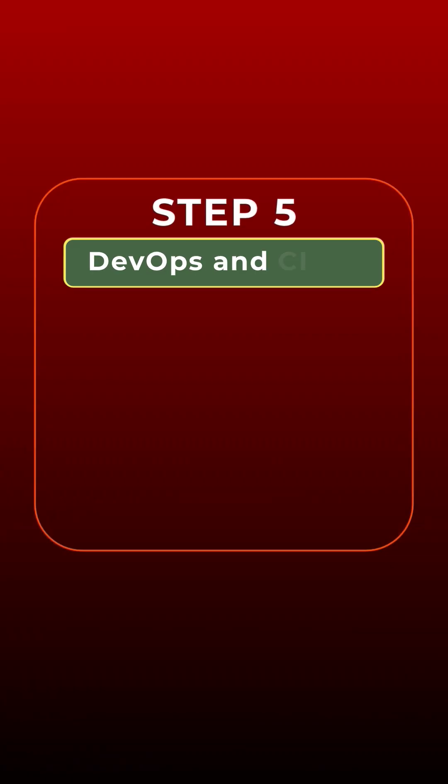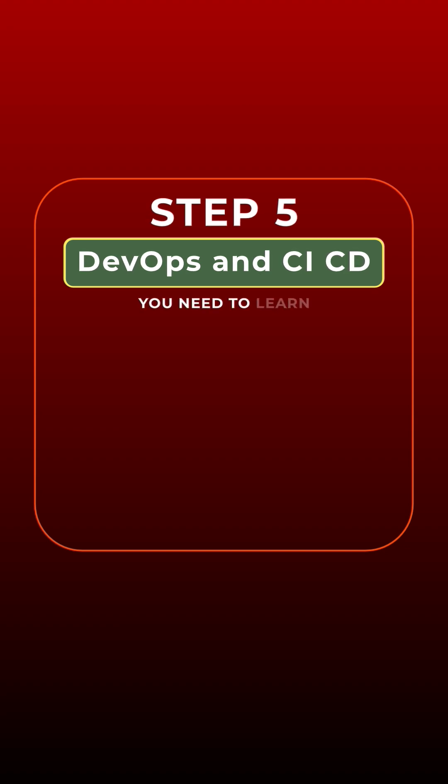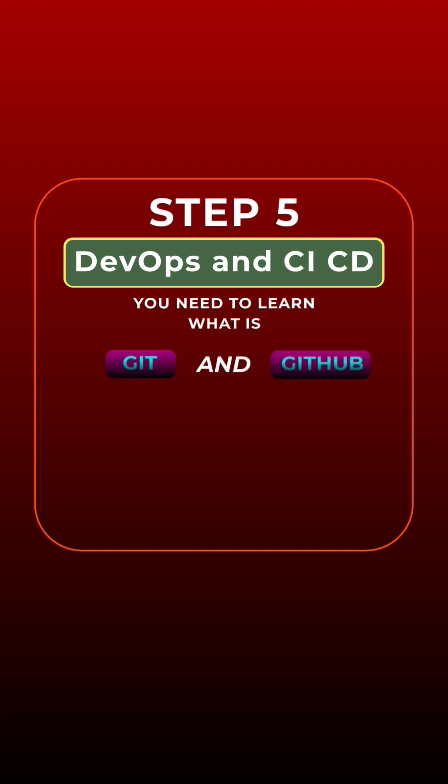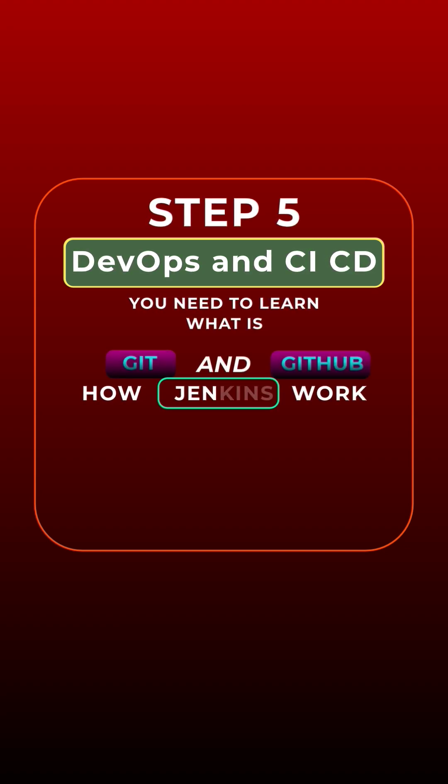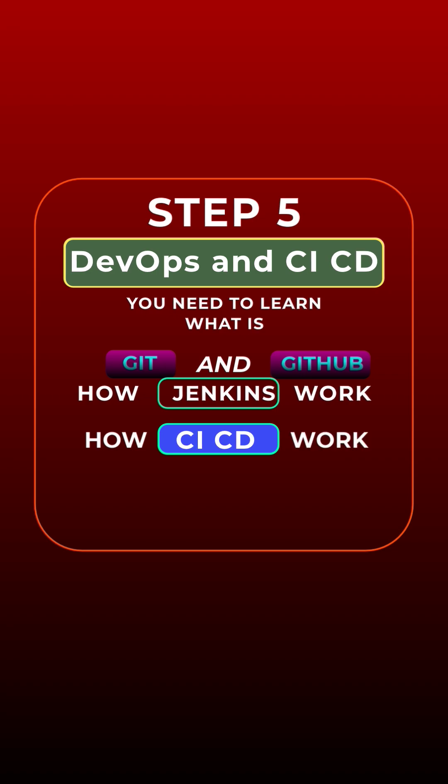Step 5: DevOps and CI/CD. You need to learn what Git and GitHub are, how Jenkins works, and how CI/CD works together.